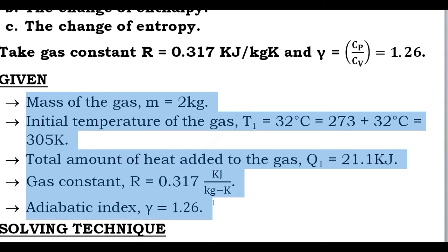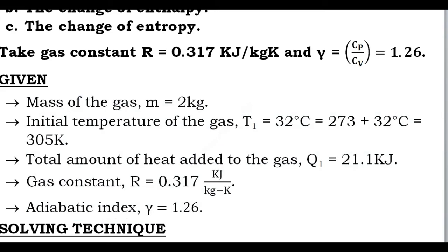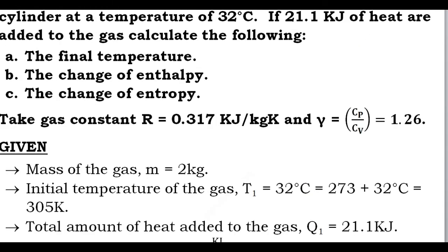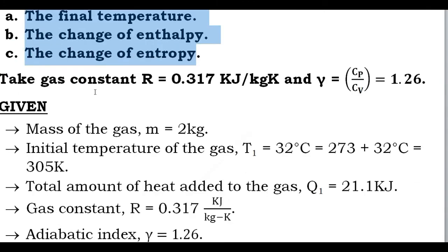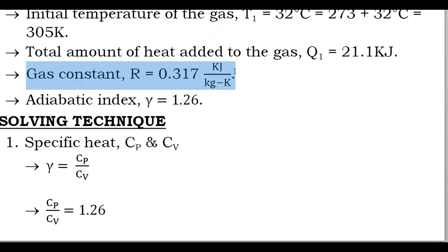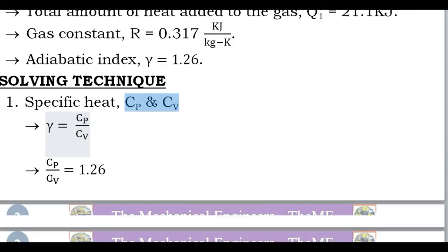Using these five conditions we are going to find the values of the final temperature, the change of enthalpy, and the change of entropy. First I will find the values of Cp and Cv, because by finding these two values we can easily find all three unknowns. We will use the formulas of adiabatic constant and gas constant.